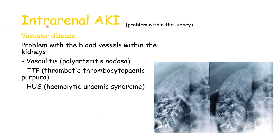Still within intrarenal AKI, we have vascular diseases — problems with the blood vessels within the kidneys. An example is vasculitis; a type is polyarteritis nodosa, in which immune complex deposition occurs in the kidneys. We can see this in images showing the renal artery dividing into smaller arterioles with immune complex deposits distributed around the kidney.